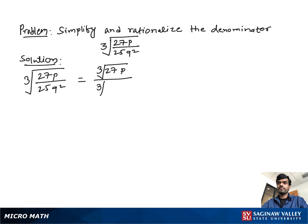Further, we can write this as cube root 27 times cube root p over cube root 5 times 5 times q times q. To make the denominator a rational number, we need to remove the cube root.